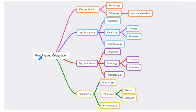Here is the deal. These are the bleeding and coagulation disorders. As you know, for us to coagulate, several things happen. First, vasoconstriction, then primary hemostasis thanks to platelets. After that, we have secondary hemostasis thanks to coagulation factors. And then fibrinolysis — you dissolve the clot and restore the normal function of the blood, blood flowing smoothly.